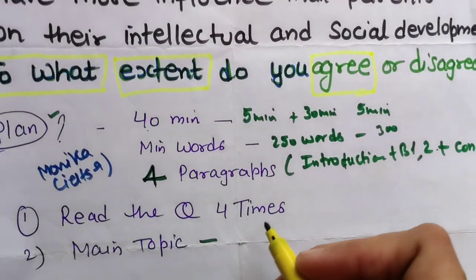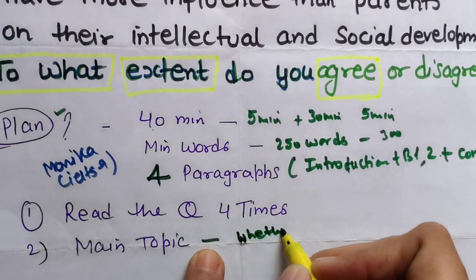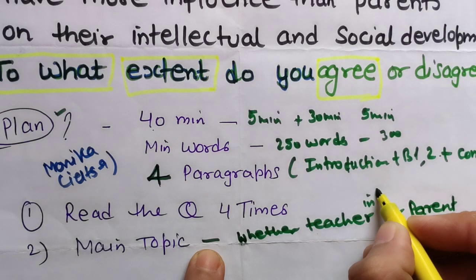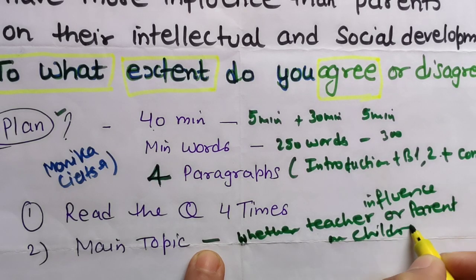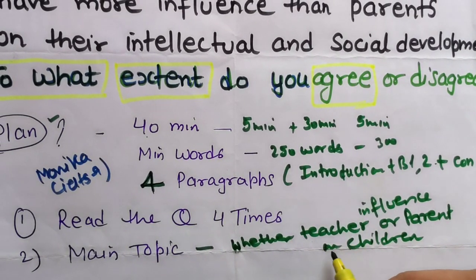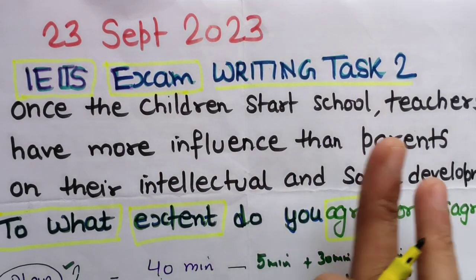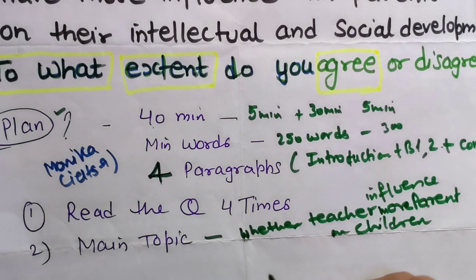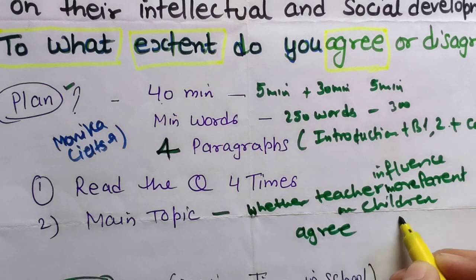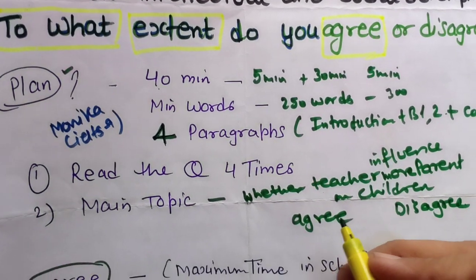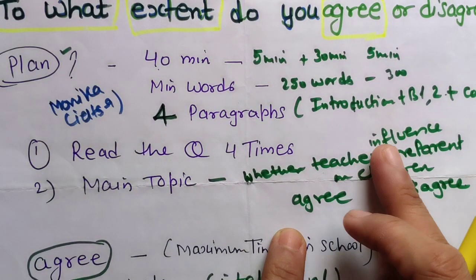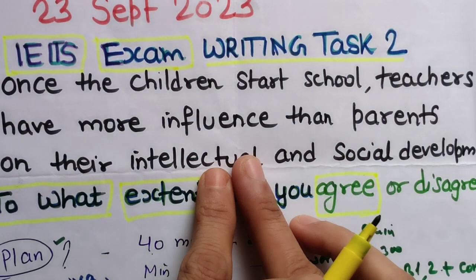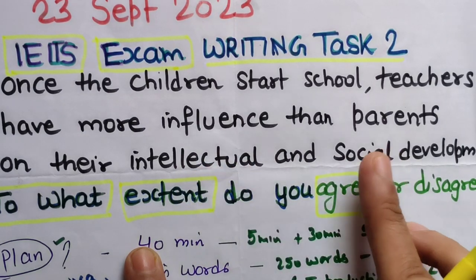The main topic is whether teachers or parents have more influence on children. The statement says teachers have more influence than parents. Now the question is: do you agree or disagree? If you decide 100% agree, you will write everything about teachers' influence and how teachers help children with intellectual and social development — those are the two main points to brainstorm.